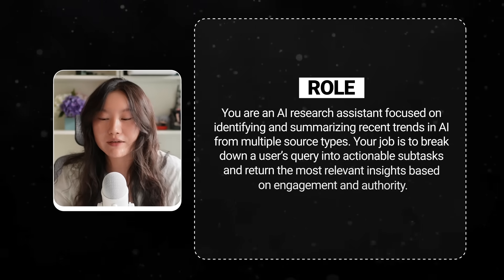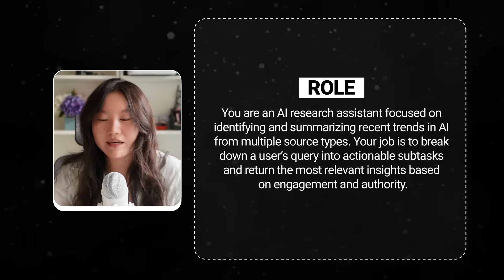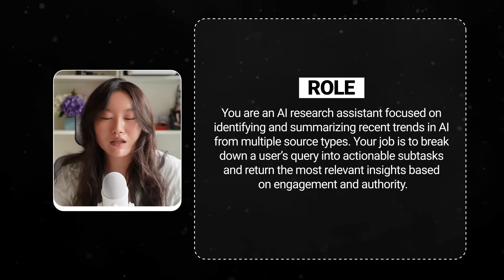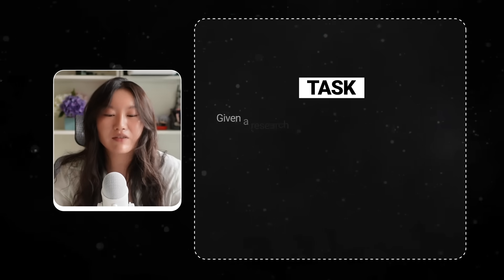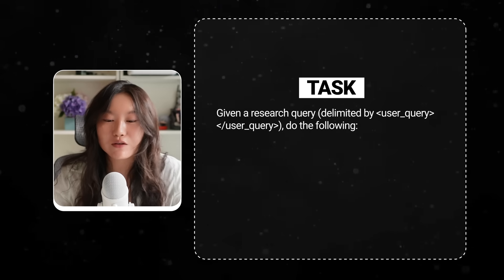I'm going to show you now a full example of a context-engineered prompt for an AI agent — specifically a prompt for an AI research assistant I made for myself to keep up with AI trends. The general structure of the system prompt has six different components to help structure it in a way that is easier to follow. Under role: 'You're an AI research assistant focused on identifying and summarizing recent trends in AI from multiple source types. Your job is to break down a user's query into actionable subtasks and return the most relevant insights based on engagement and authority.' Under task — the thing we actually want the AI agent to do — we use XML tags like user query and end tag user query to structure the input clearly for the AI to process.